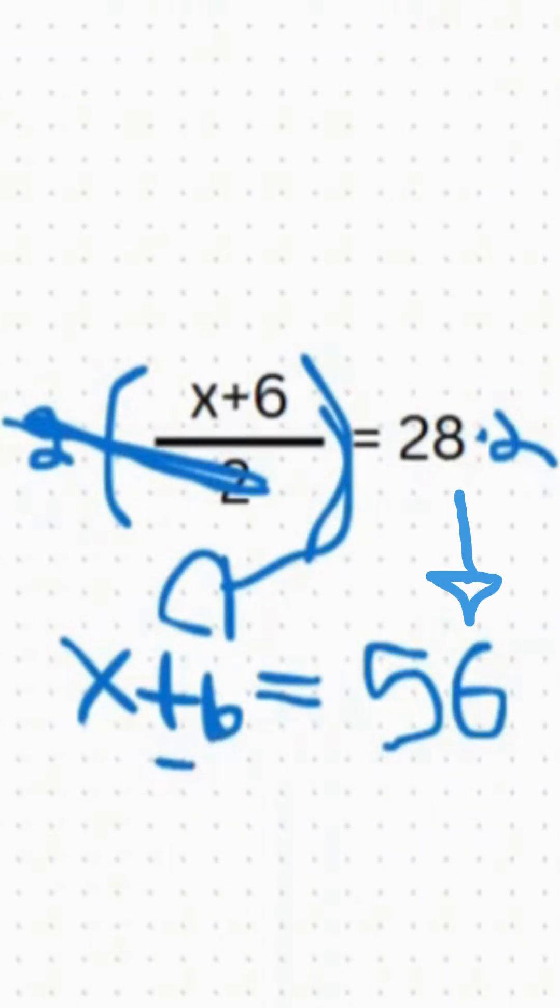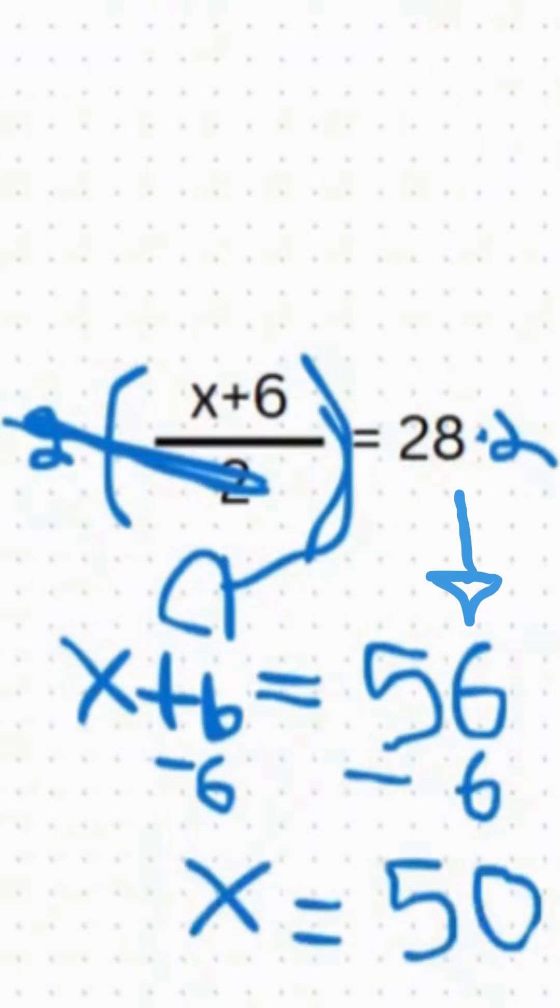We need to do the inverse operation, that would be minus 6 because we want to undo what was done before. After we subtract 6 from each side of the equation we are left with x equals 50.